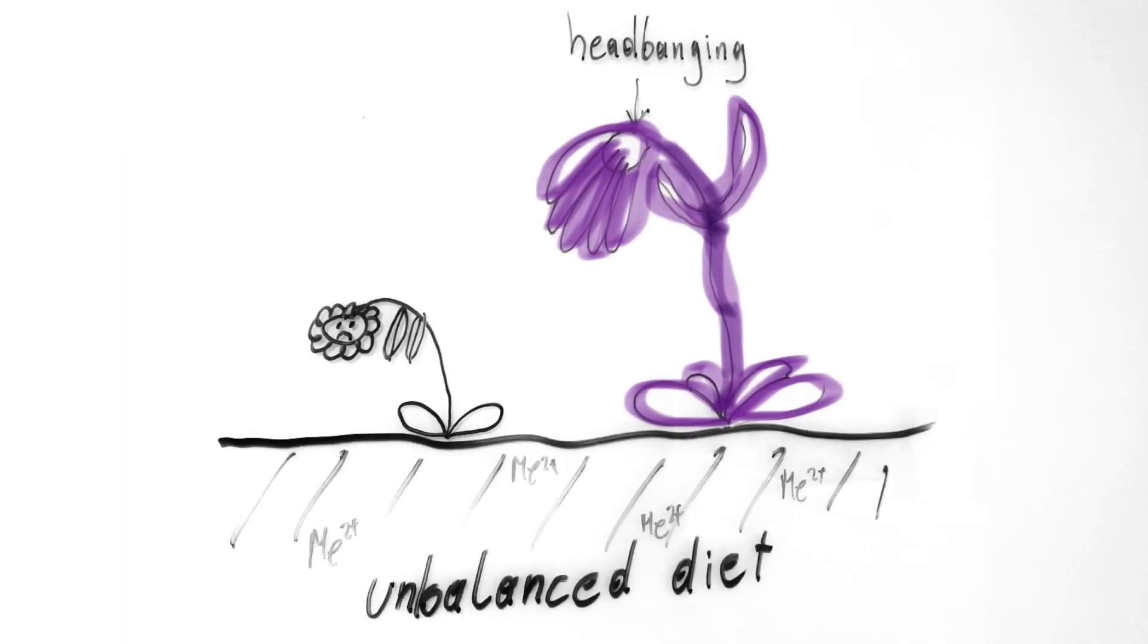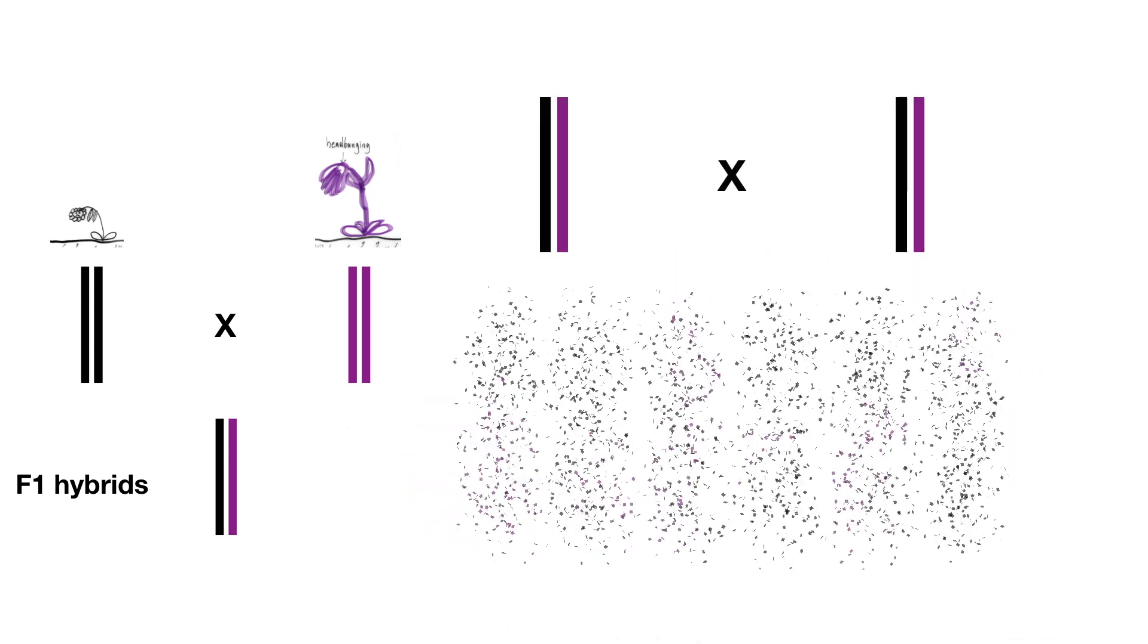What's the genetic difference between these two types of plants? We've crossed unhappy black and happy purple plants together to create plants with a mixed genome. Then we cross those again to mix the genomes even further.